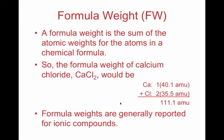One calcium atom plus two times the molecular mass of chlorine, added together, equals 111.1 AMUs. Formula weight refers to one formula unit of an ionic compound. Ionic compounds typically start with a metal and a non-metal as the anion, and in ionic compounds, electrons are gained or lost.